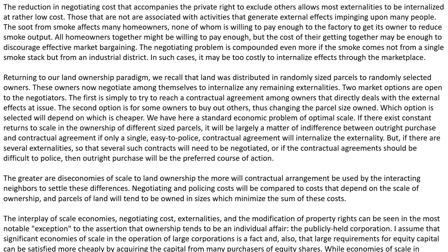But if there are several externalities, so that several such contracts will need to be negotiated, or if contractual agreements should be difficult to police, then outright purchase will be the preferred course of action. Negotiating and policing costs will be compared to costs that depend on the scale of ownership, and parcels of land will tend to be owned in sizes which minimize the sum of these costs. The interplay of scale economies, negotiating costs, externality, and the modification of property rights can be seen in the most notable exception to the assertion that ownership tends to be an individual affair: the publicly held corporation. I assume that significant economies of scale in the operation of large corporations is a fact, and also that the large requirements for equity capital can be satisfied more cheaply by acquiring the capital from many purchases of equity shares.